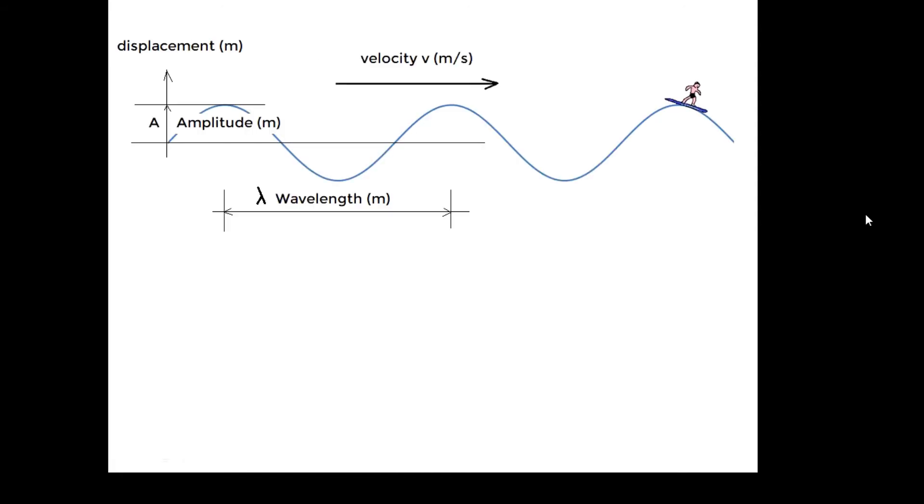Some key terms: velocity is speed in meters per second in a given direction. Displacement is how far the particles have moved compared to where they would be without the wave—the equilibrium position. Amplitude is the maximum displacement.